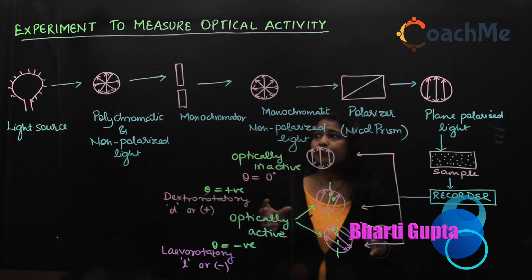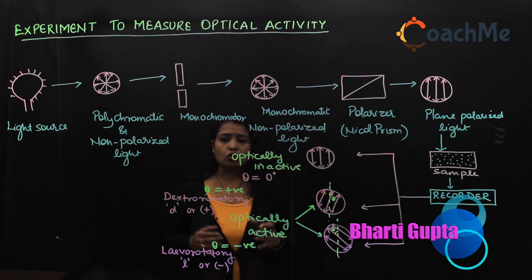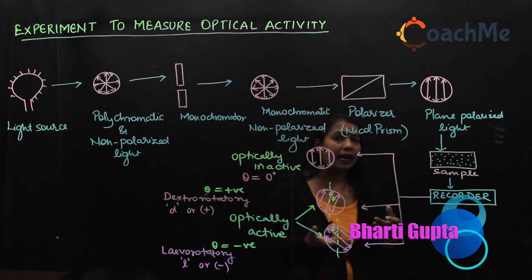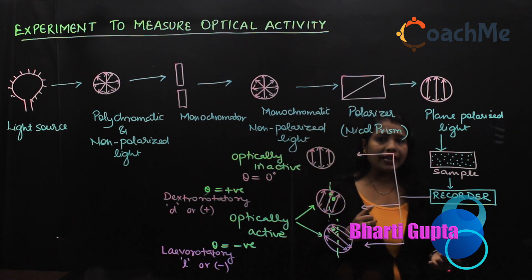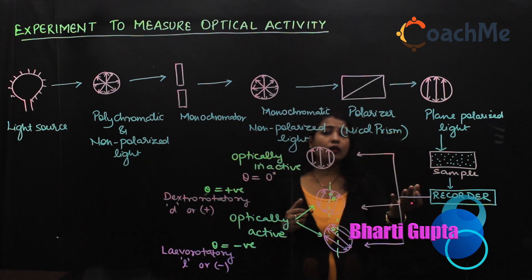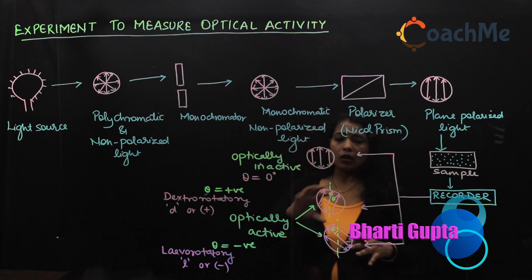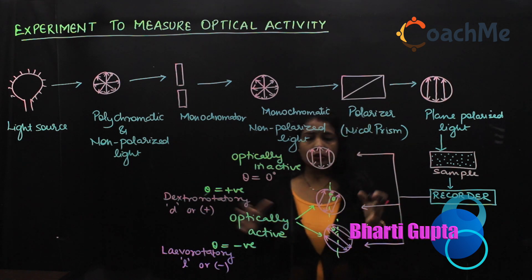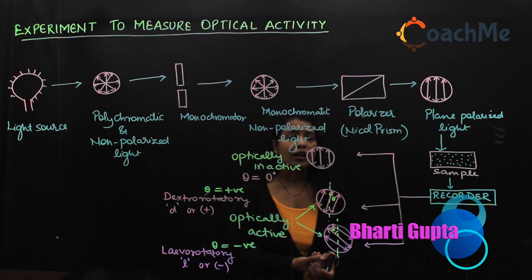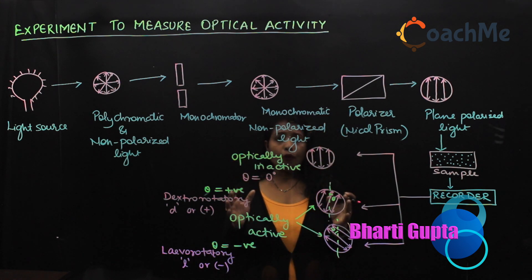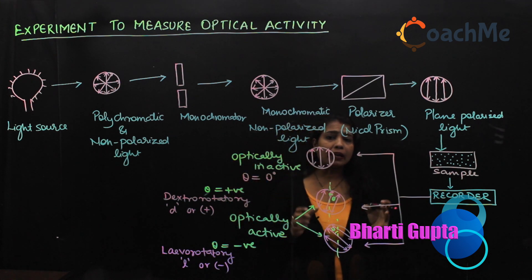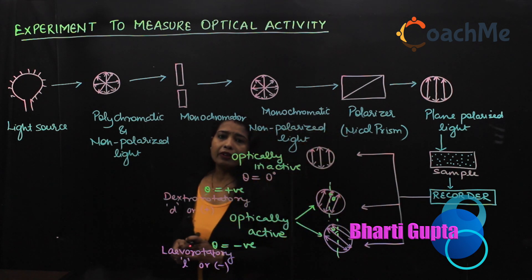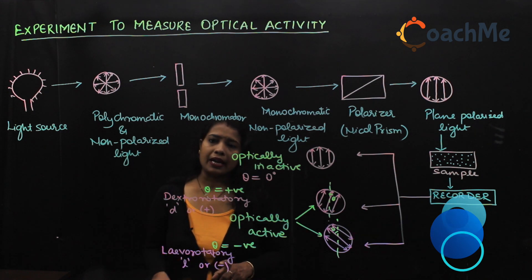So this is how experimentally we can predict whether a compound is optically active or inactive, how much it is optically active, how much it will rotate the light, and what relation exists between two compounds by seeing the value of theta — its direction and magnitude. That will help us understand the different relations between optical isomers, which we will see later.